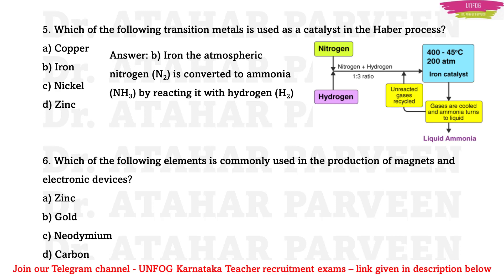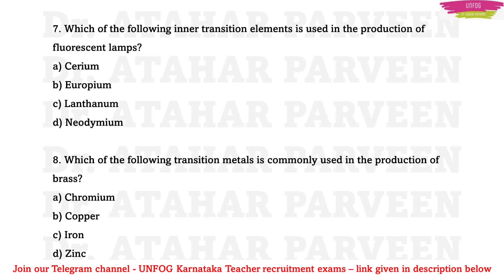MCQ 6: Which element is commonly used in production of magnets and electronic devices? Neodymium is the element commonly used in production of magnets and electronic devices. MCQ 7: Which inner transition element is used in production of fluorescent lamps? Europium is the inner transition element used in the production of fluorescent lamps.